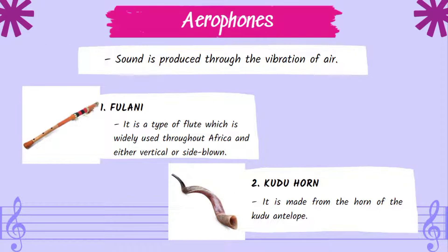The last classification is the aerophone, where sound is produced through the vibration of air. Two examples: First, Fulani — a type of flute widely used throughout Africa, either vertical or side-blown. Second, Kudu horn — made from the horn of the kudu antelope.